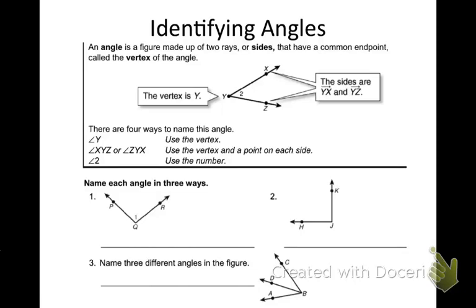An angle is a figure made up of two rays or sides that have a common endpoint called the vertex of the angle. If you look at it there, the vertex of Y — the point there is where the angle or the two rays meet.